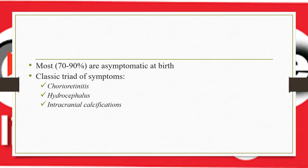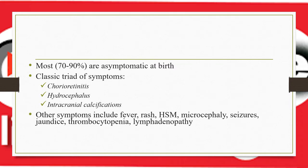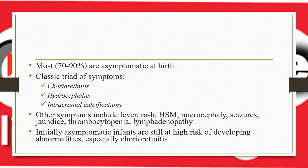More than 70 to 90 percent of congenital toxoplasmosis cases are asymptomatic. The classic triad — which should never be forgotten — consists of chorioretinitis, hydrocephalus, and intracranial calcification. Other clinical manifestations include fever, rash, hepatosplenomegaly, microcephaly, seizures, jaundice, thrombocytopenia, and lymphadenopathy. Even initially asymptomatic infants remain at high risk of developing chorioretinitis later in life, so asymptomatic at delivery does not mean the child will be fine lifelong.